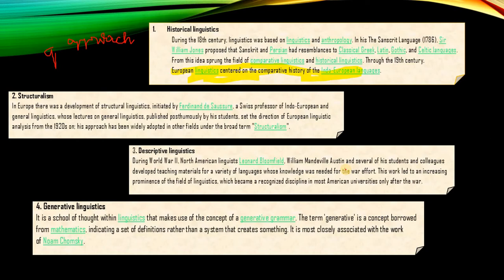Generative Linguistics is another approach to language study — a school of thought within linguistics that makes use of the concept of a generative grammar. This term was borrowed from mathematics; it indicates a set of definitions rather than a system that creates something. It is most closely associated with the work of Noam Chomsky.